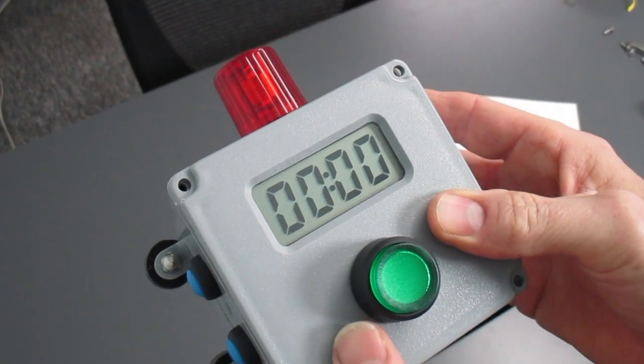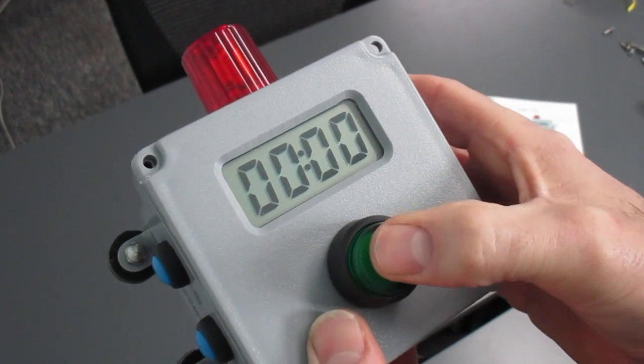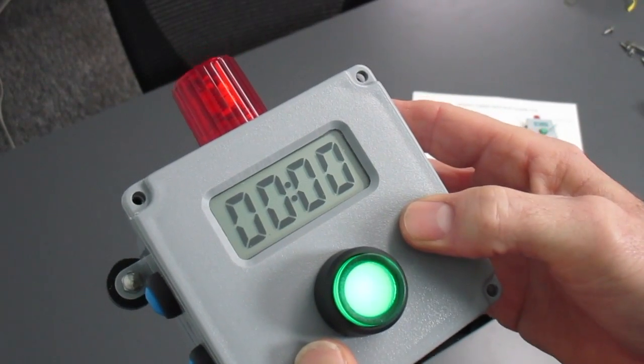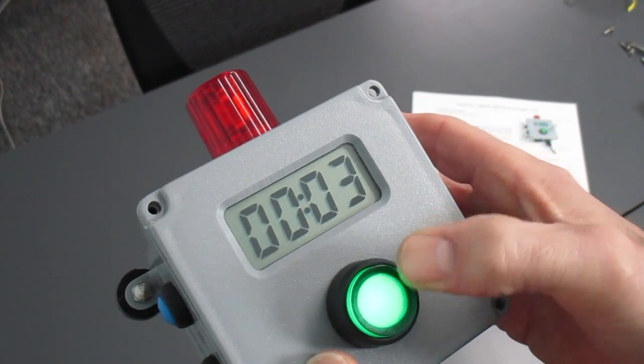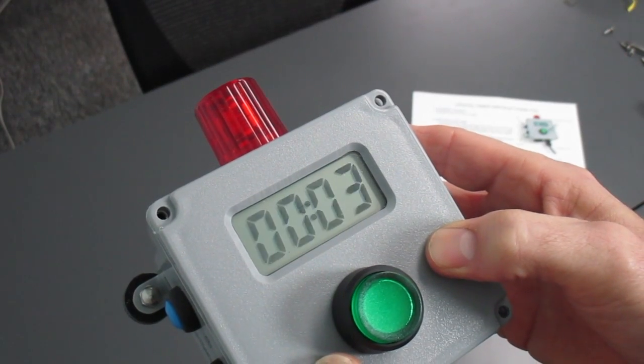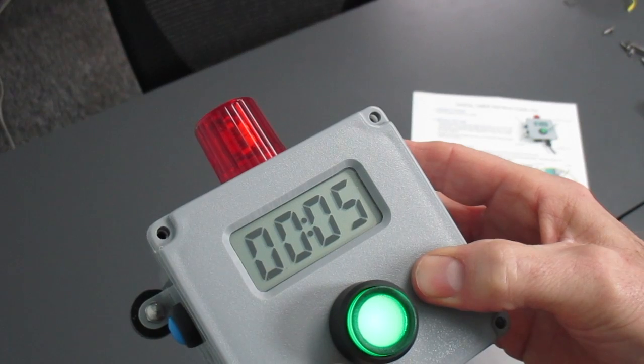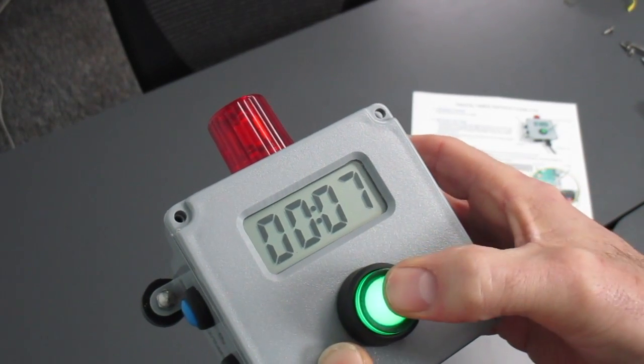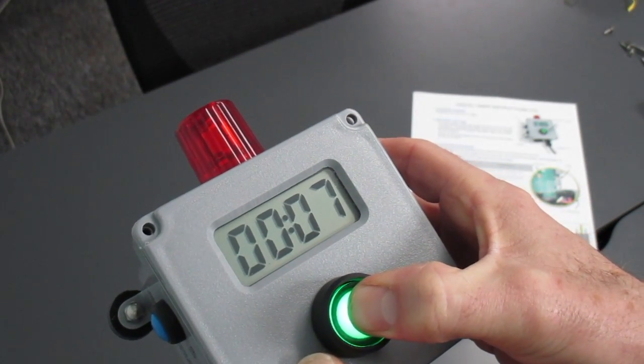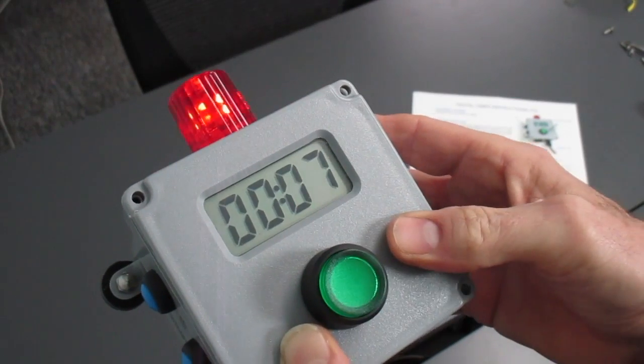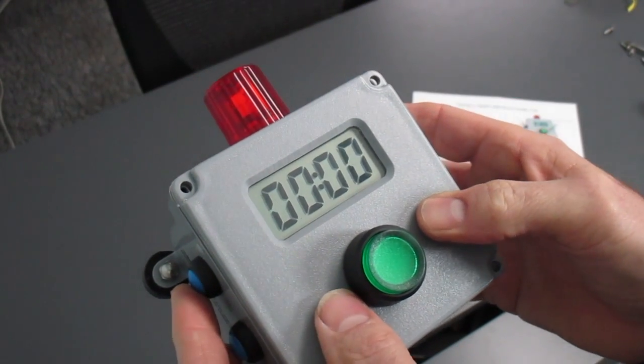We'll set it to zero and we'll do the same thing counting up. We'll cancel it by holding the button down for two seconds which is kind of a universal behavior for all of the modes.